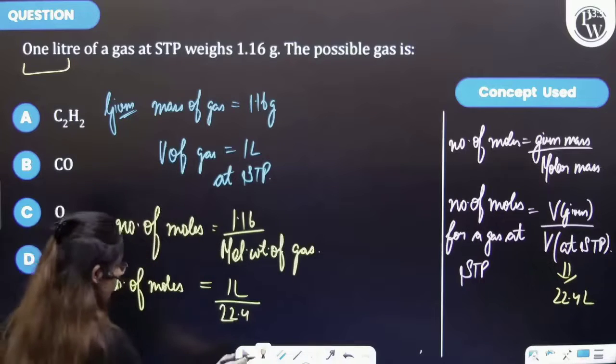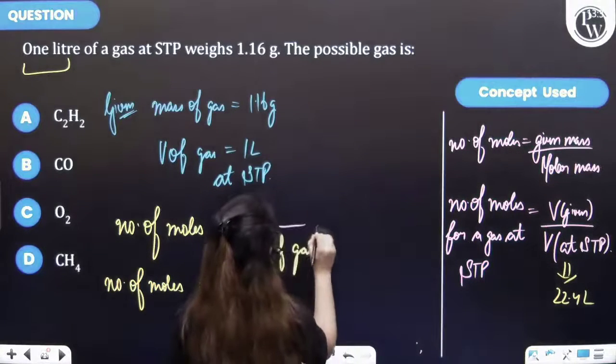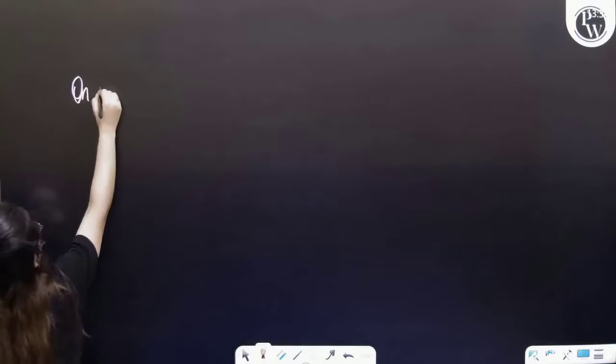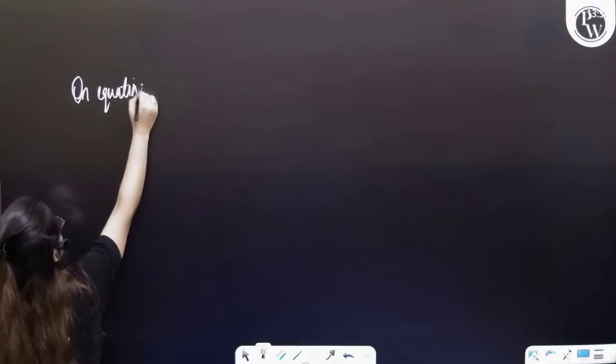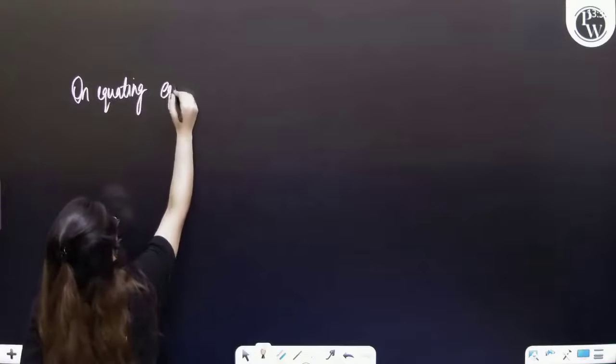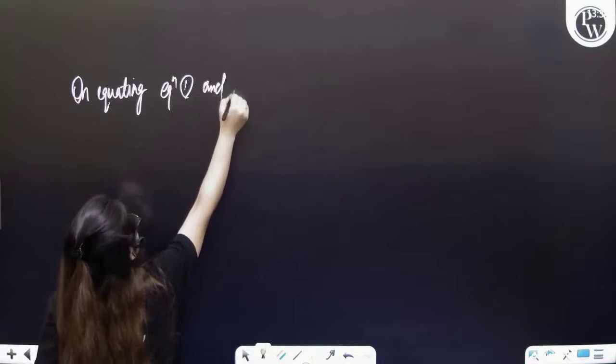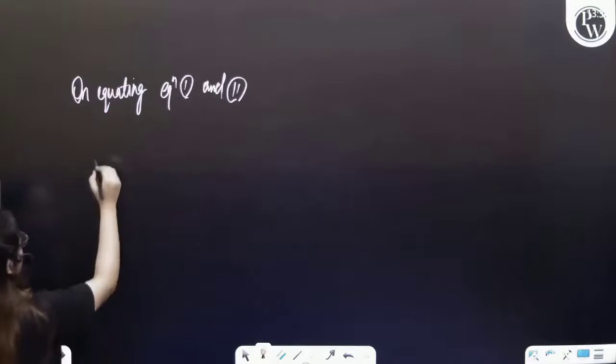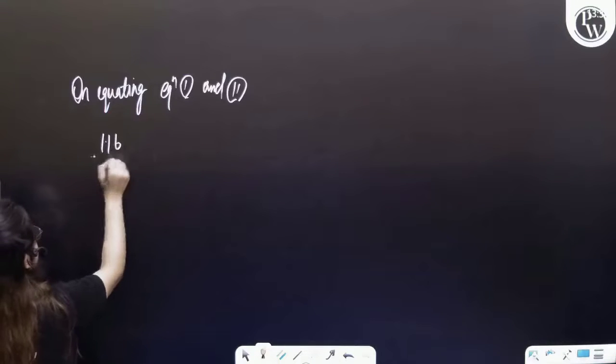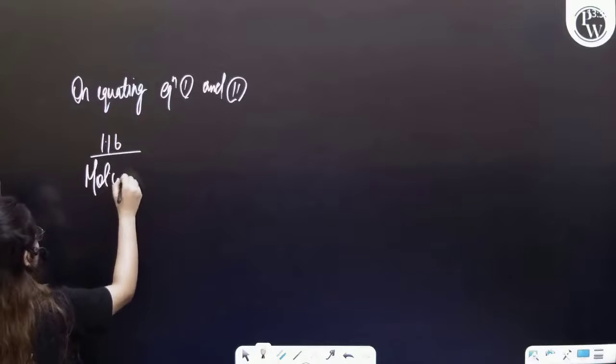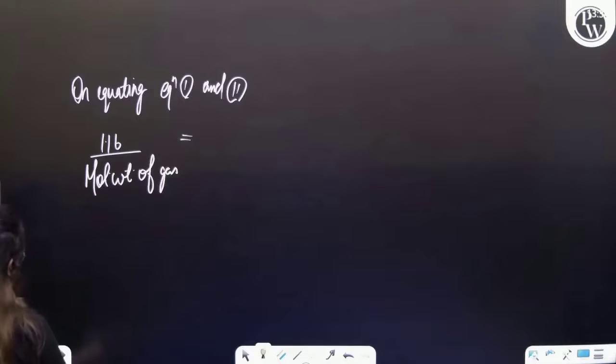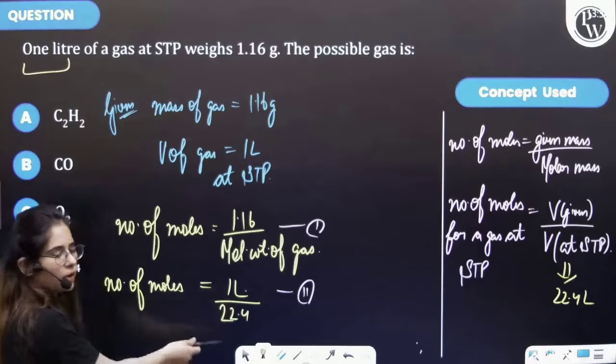And so therefore, on equating these two equations, two number of moles are equal. On equating equation 1 and 2, 1.16 upon molecular weight of gas, which is equal to 1 liter upon 22.4 liters.